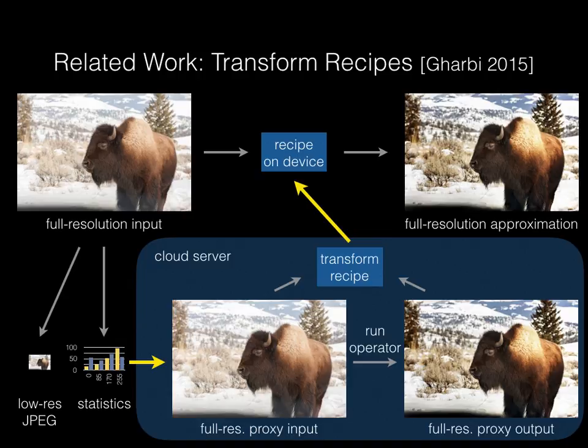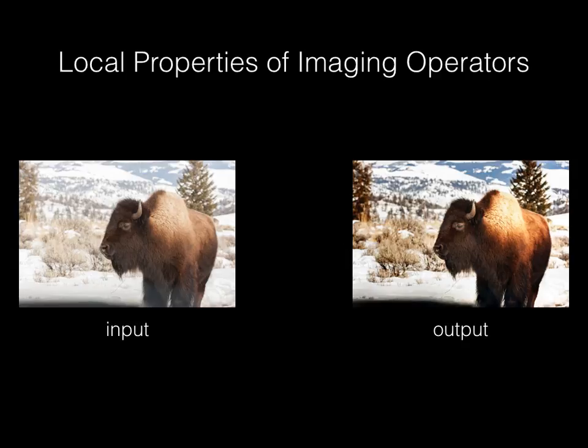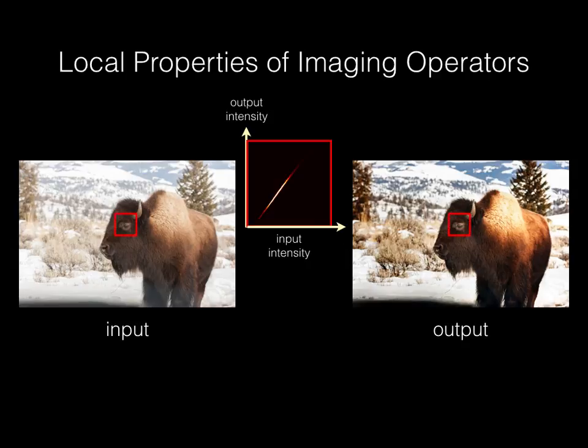To illustrate the idea behind our technique, let's start with a simple example. On the left is an input image, and on the right is the result after our user has applied a complex set of filters in Photoshop. Although the relationship between the two images is complicated, if we look at a small patch, say around the eye, and plot the relationship between input and output intensity, it's pretty close to a line.